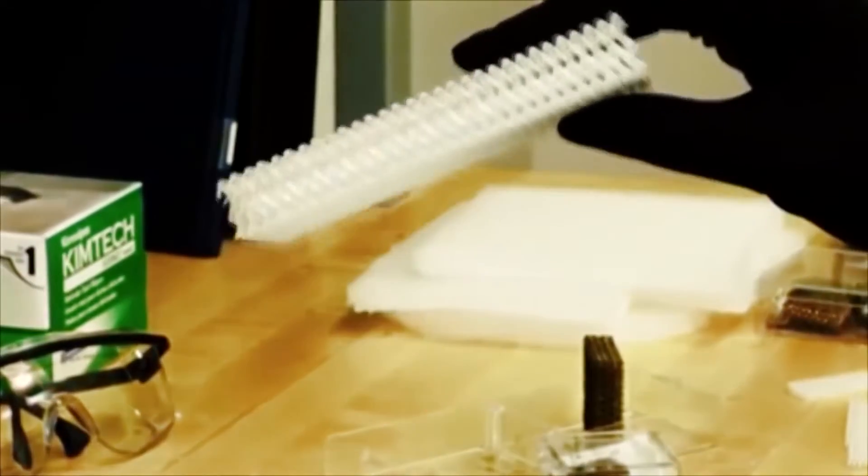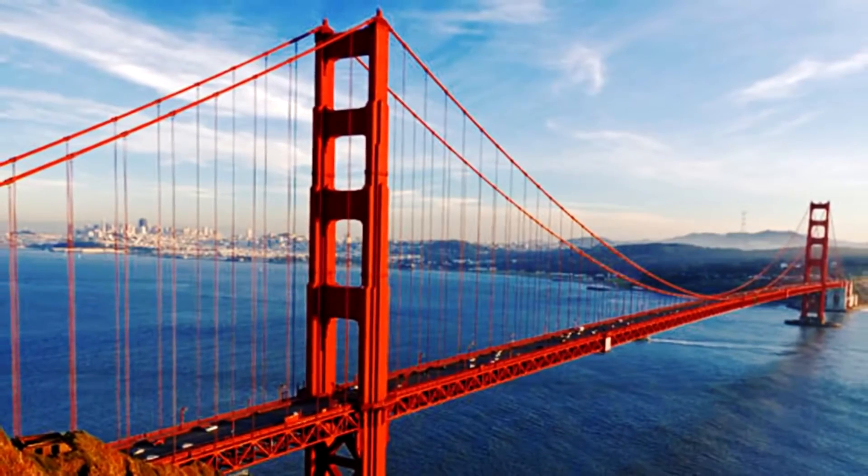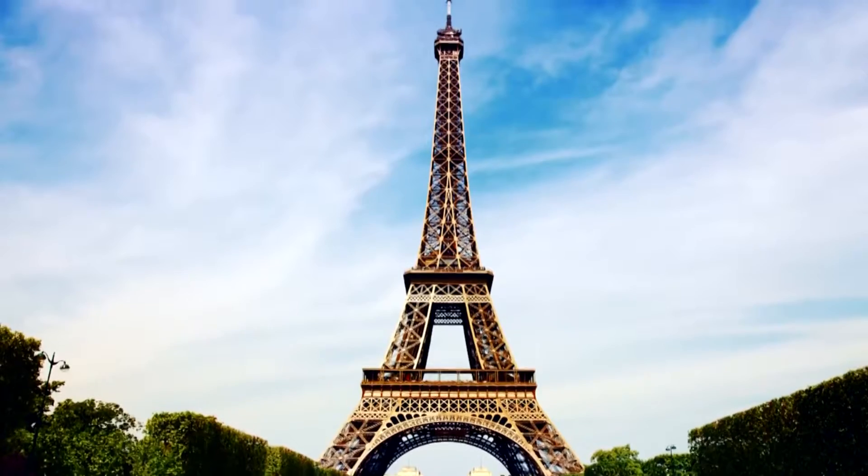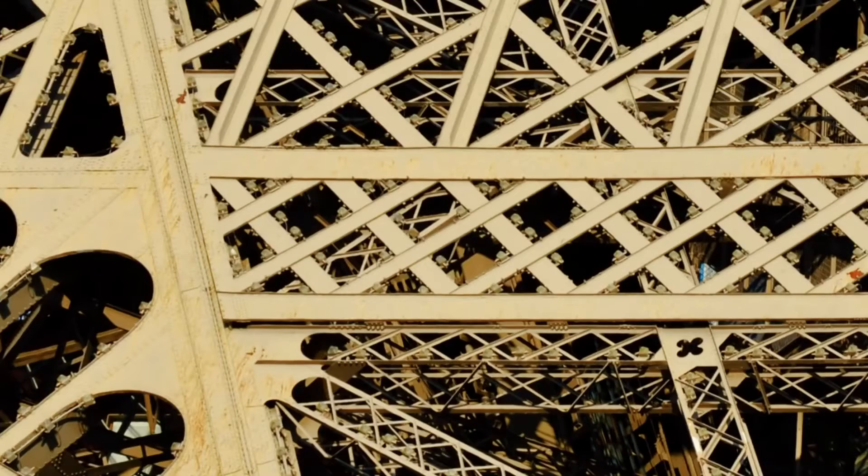The thing about micro-lattice is that 99% of it is air. The structure reminds of an Eiffel Tower or the Golden Gate Bridge in San Francisco. Interestingly enough, the metal is a thousand times thinner than human hair.